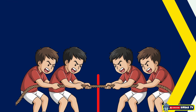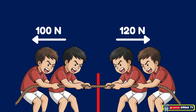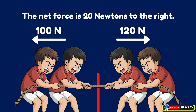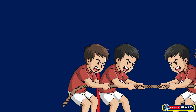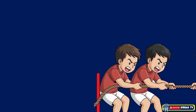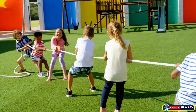In another round of tug of war, Team A pulls with 120 Newtons and Team B pulls with 100 Newtons. Net force equals 120 Newtons minus 100 Newtons, which is 20 Newtons to the right. The rope finally moves toward Team A, and the stronger side wins. That's what happens when forces become unbalanced.